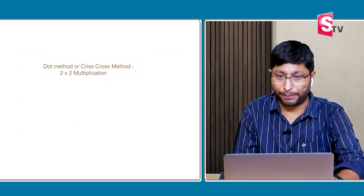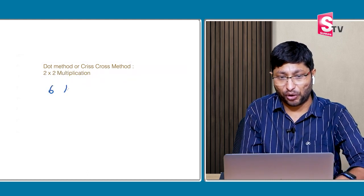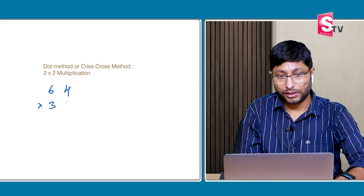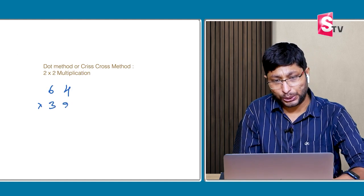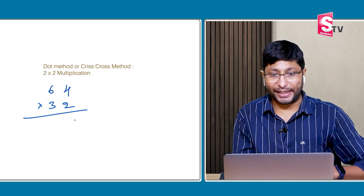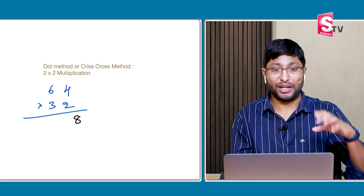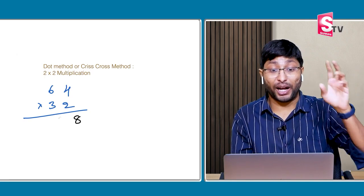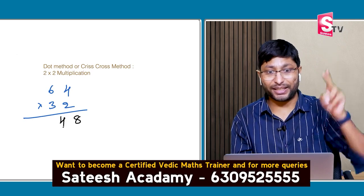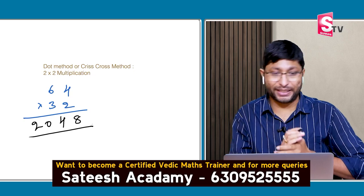One more problem: 64 multiplied by 32. Step 1: 4 twos are 8, no carry. Step 2: 6 twos are 12, and 4 threes are 12. 12 plus 12 is 24, write down the 4, 2 carry. Step 3: 6 threes are 18, plus 2 carry is 20. The answer is 2048.